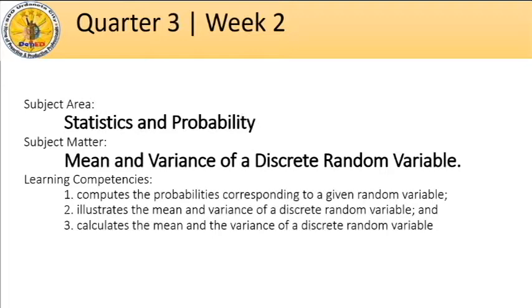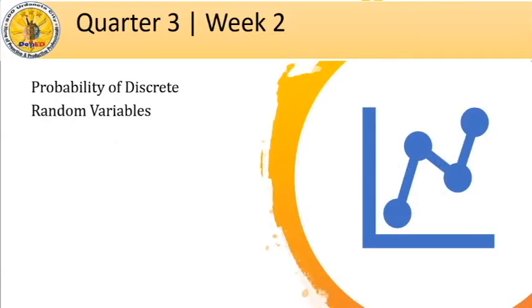Let us start, so listen carefully and learn. We recall that discrete random variables are random variables whose values are countable. Let us take this example to illustrate our lesson.